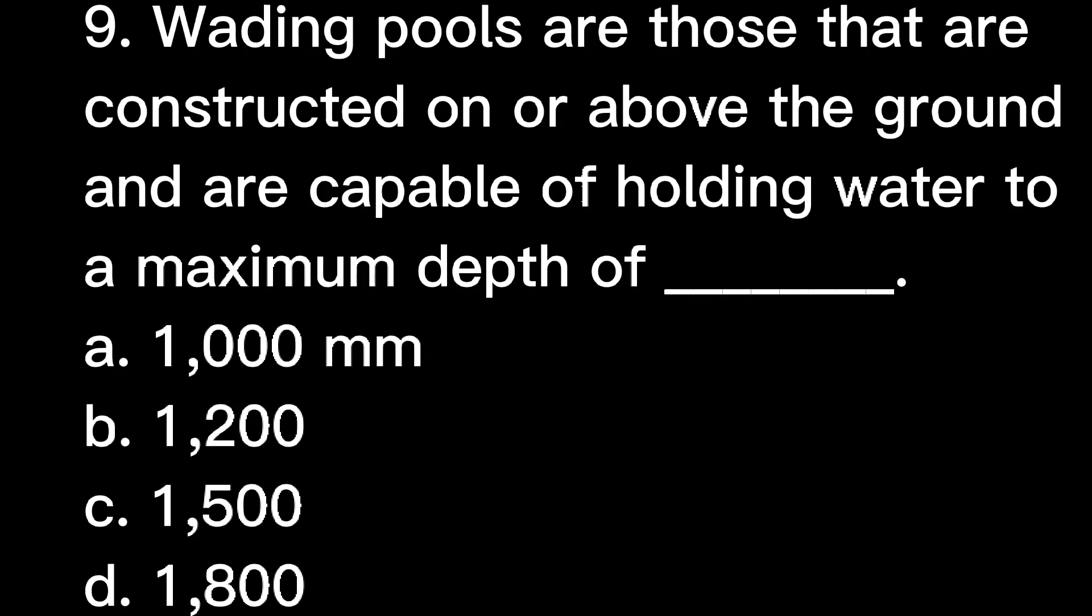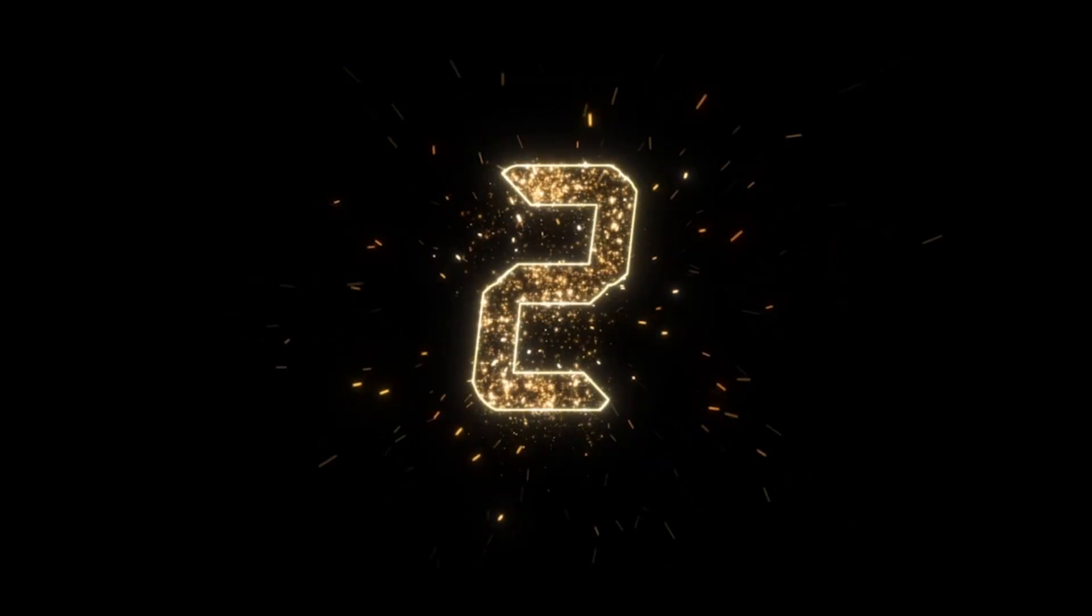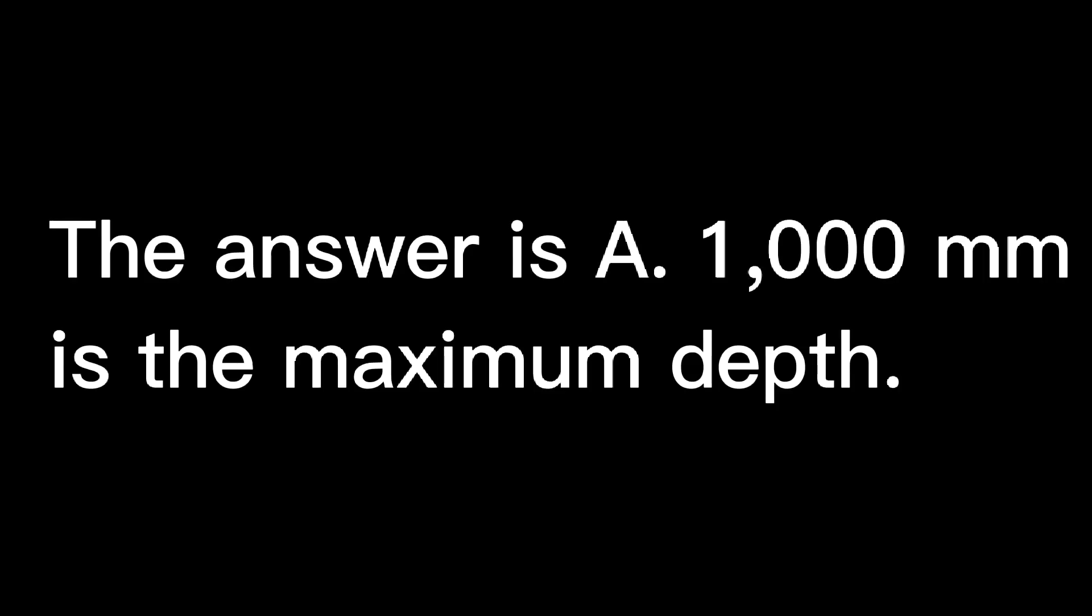Question 9: Wading pools are those that are constructed on or above the ground and are capable of holding water to a maximum depth of: A. 1,000 mm, B. 1,200, C. 1,500, D. 1,800. The answer is A. 1,000 mm is the maximum depth.